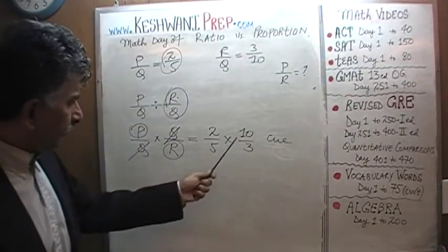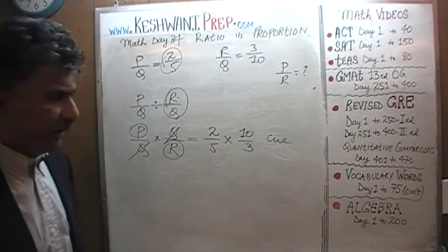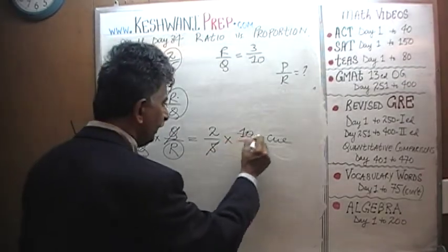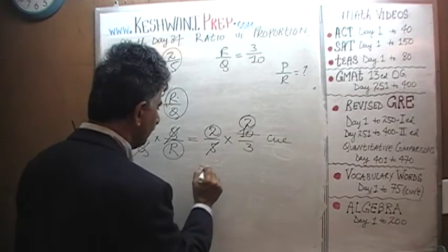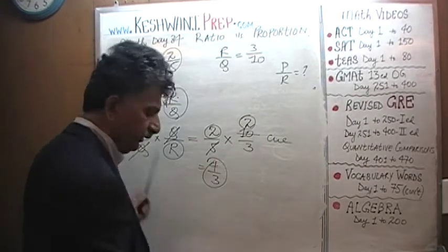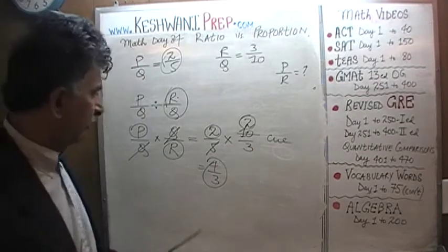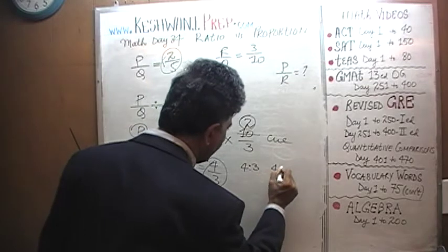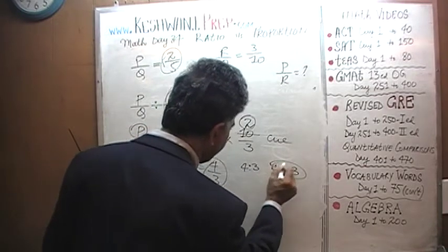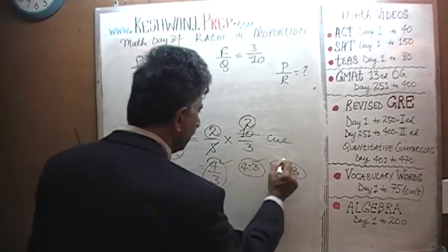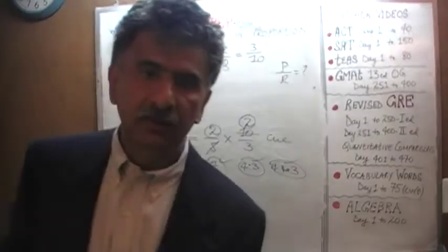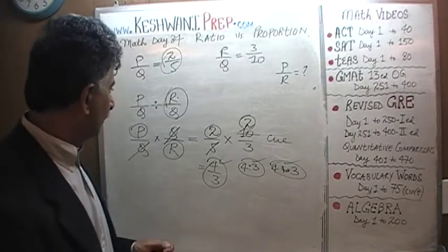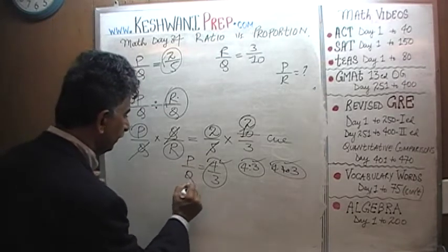We see a 10 here, we see a 5 here. Let's divide top and bottom by 5. 5 goes away and 10 becomes 2. 2 times 2 is 4. So the answer is 4 to 3. These are all acceptable ways of expressing the ratio of two quantities. The answer is the ratio of P to R is 4 to 3.